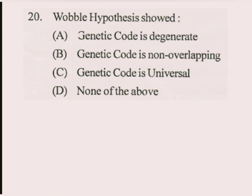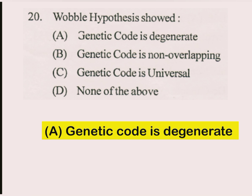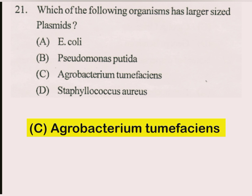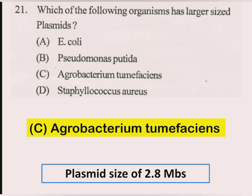Question number 20. Wobble hypothesis showed that genetic code is degenerate. Question number 21. Which of the following organisms has the largest sized plasmid? The answer is C: Agrobacterium tumefaciens, whose plasmid size is 2.8 million base pairs.